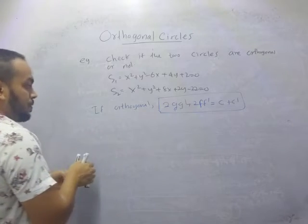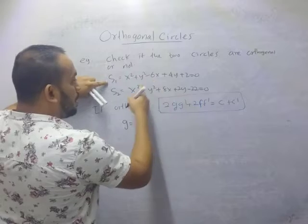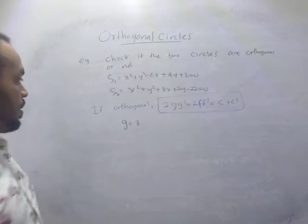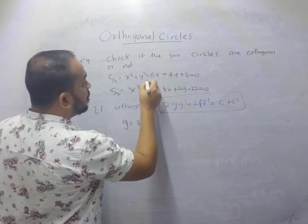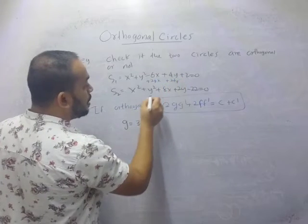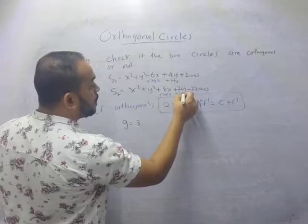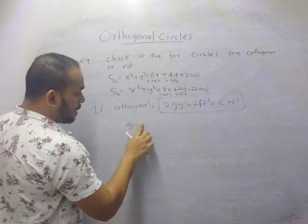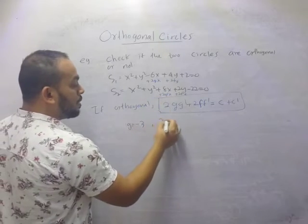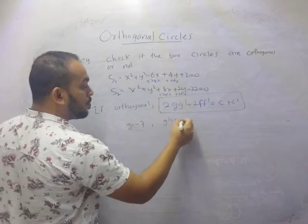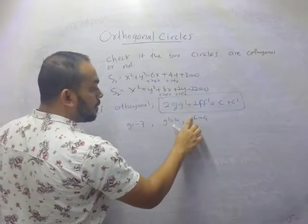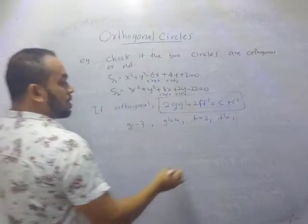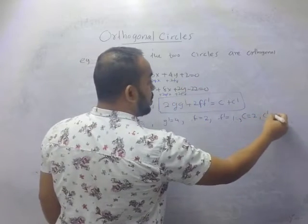We have to obtain the values of g, g', f, f', c, and c'. From the first circle, 2g = −6, so g = −3. Then 2g' = 8, so g' = 4. Then 2f = 4, which means f = 2. And 2f' = 2, which means f' = 1. So c = 2 and c' = −22.